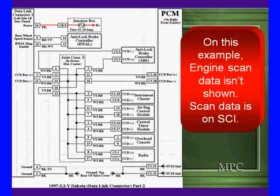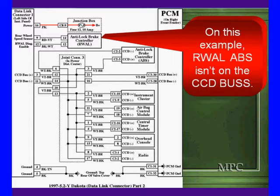Let's look at the circuit. On this example, engine scan data isn't shown. We didn't have room. We left off the SCI. We cut that off because this thing is full up the way it is. On this example, we have something else too.